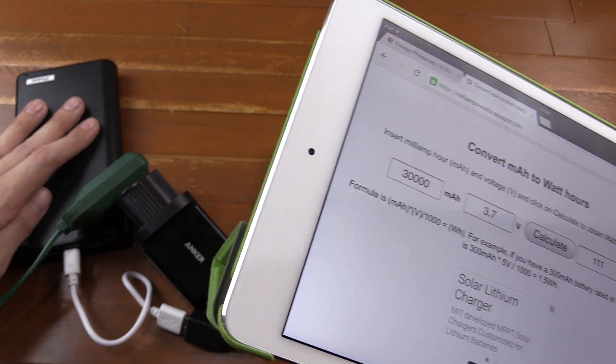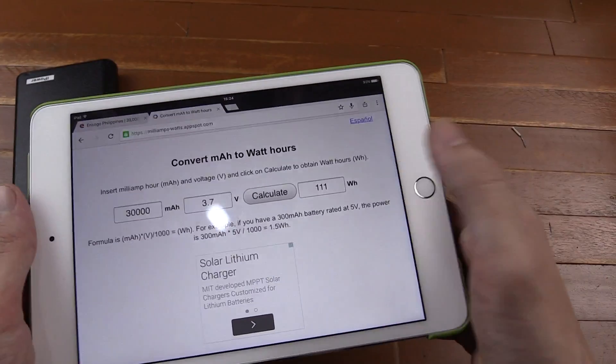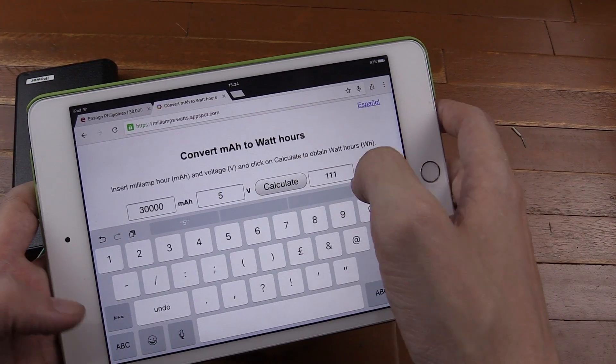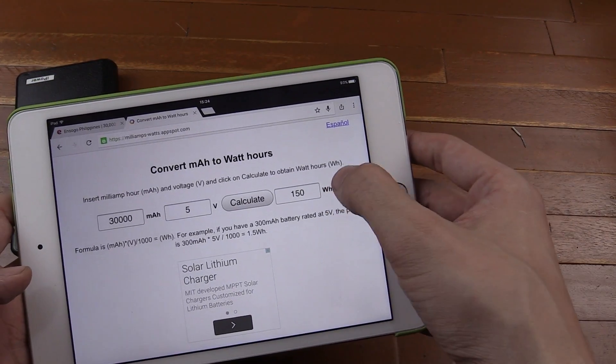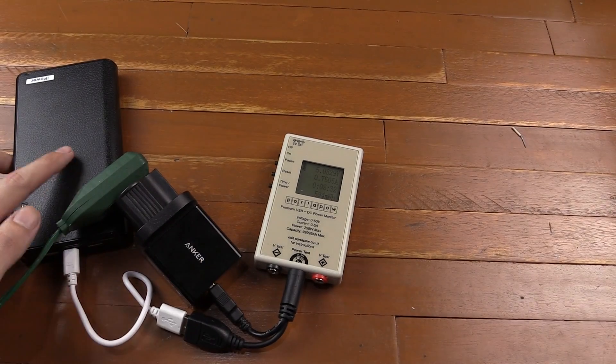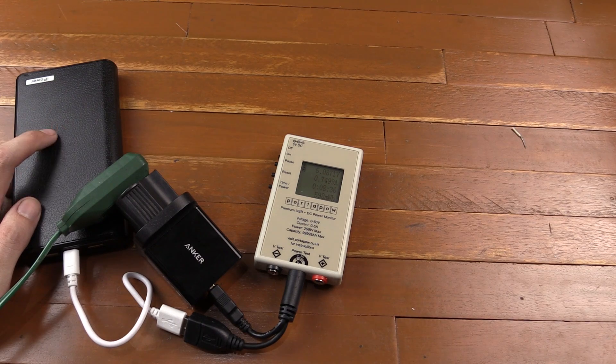So this battery pack has basically got a rating of 111 watt-hours, but we're charging at 5 volts. So if I put in 5 here, calculate, you can see that works out to 150 watt-hours. So you do have to bear in mind the voltage that you're charging versus the voltage of this because you might be expecting more thinking that it's based on 5 volts, but really it's based on 3.7 volts.